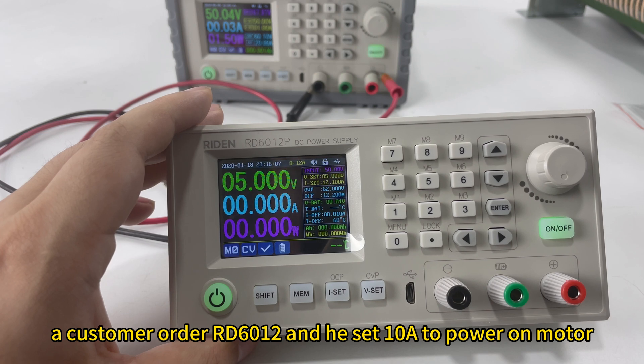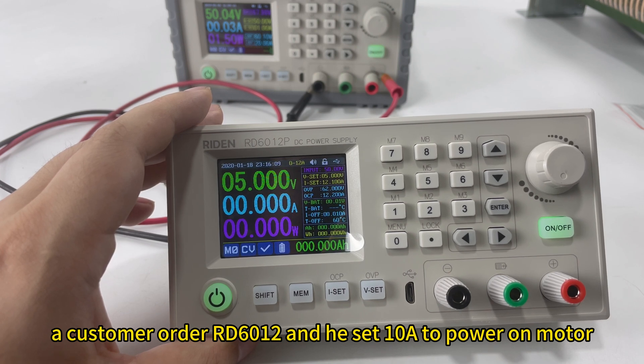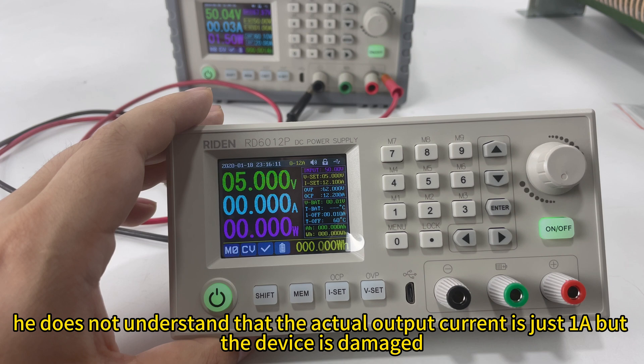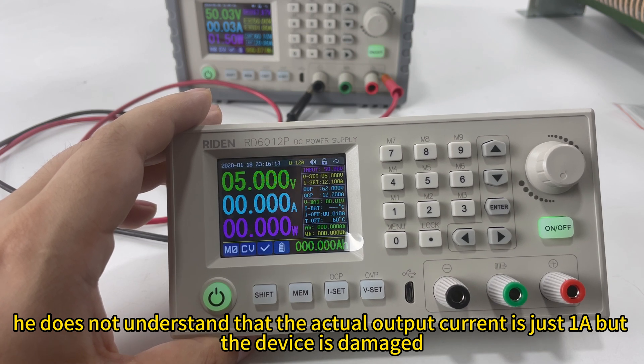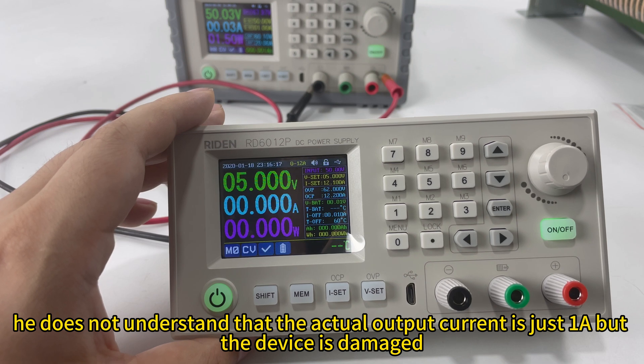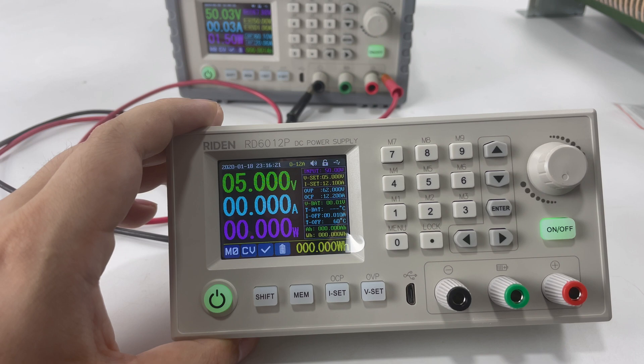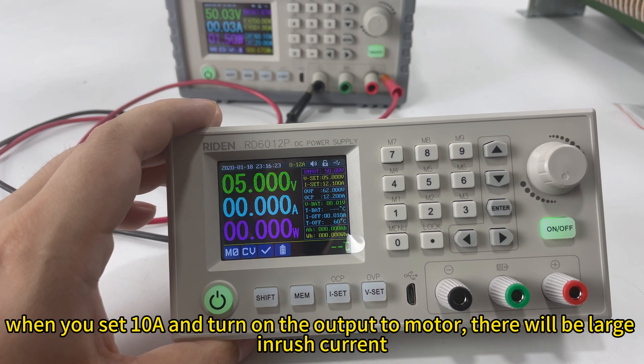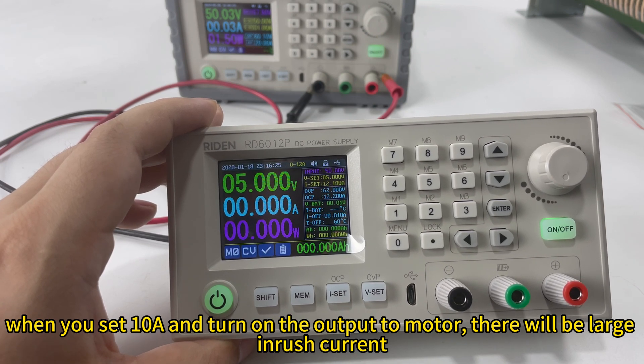The max output current you use for the motor can only be 4A. A customer ordered RD62RP and he set the output current at 10A. He said that when the motor is connected, the current consumed is only 1A.